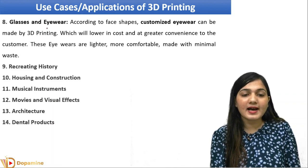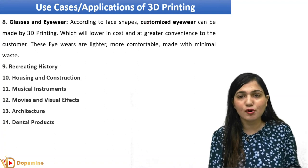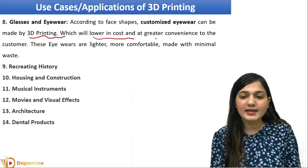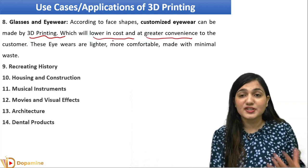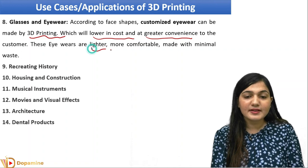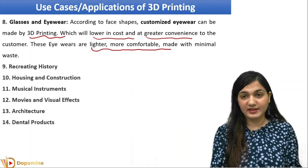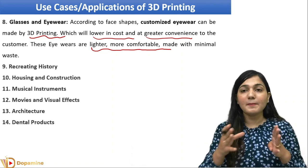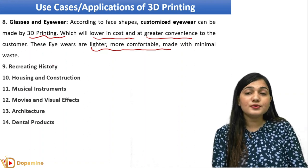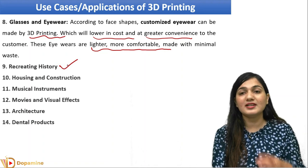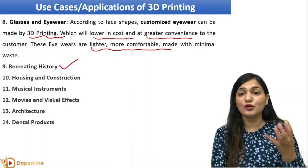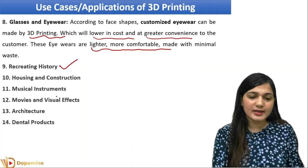It can also be used to make glasses and eyewear. Customized eyewear can be made according to a person's face, which is easy to do with 3D printing, and the cost is lower and convenient for the customer. These eyewear are even lighter, more comfortable, and produced with minimal waste. It is also used in recreating history — if you want to make historical buildings or objects for students, we can use 3D printing.